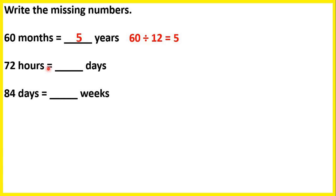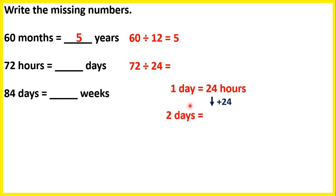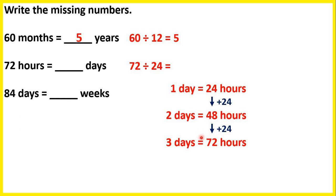72 hours is the same as how many days? We need to remember there are 24 hours in one day, so we can divide 72 by 24. The easiest way is to count up in steps of 24 until we get to 72. One day is 24 hours; 2 days is 48 hours; 3 days is 72 hours. So 72 divided by 24 is 3, and that makes sense because 24 plus 24 plus 24 is 72.